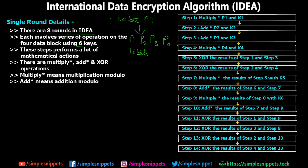These steps are performed with a lot of mathematical actions. The three main operations are: multiply modulo, addition modulo, and XOR. Multiply-star means multiplication modulo and add-star means addition modulo. When we combine modulus with multiply it becomes multiply modulo — after multiplication, if the value exceeds a certain number, you take a mod operation. Similarly add modulo means you perform addition and then if the value exceeds a certain number you perform a modulo operation.